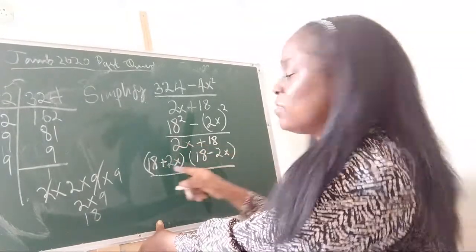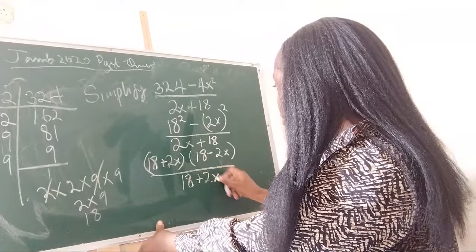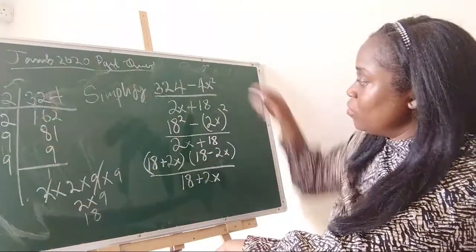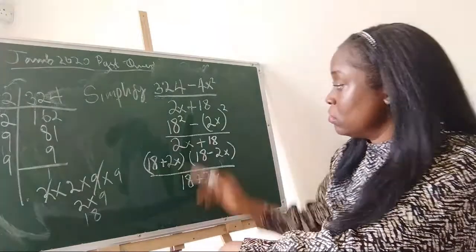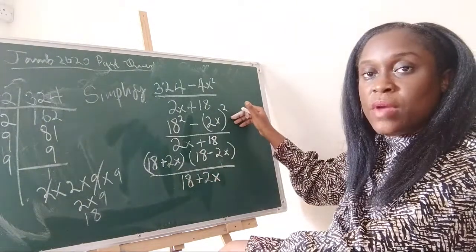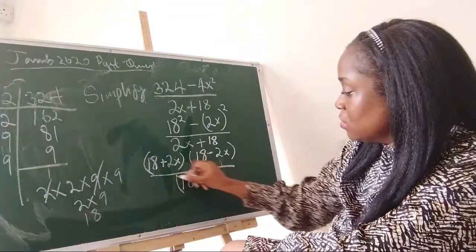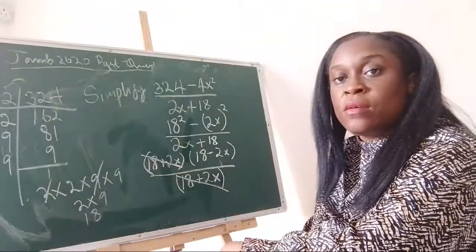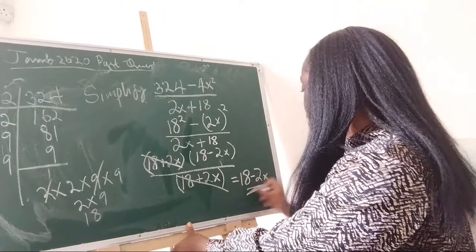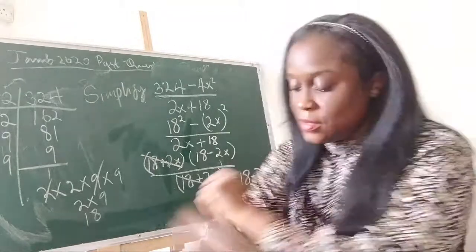Having the denominator as (18 + 2x), which matches one factor in the numerator, we can cancel those out. Our final answer is 18 minus 2x. Looking at the options for question 12, I see 18 minus 2x.